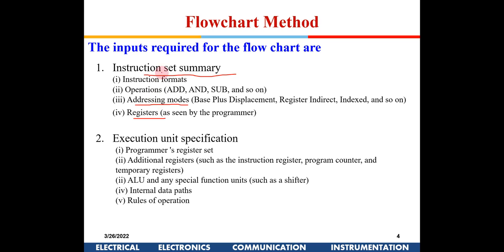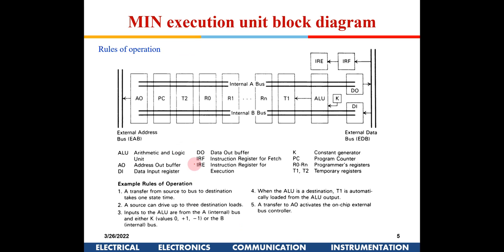Based on these assumptions we keep making the flowchart. If we find the flowchart is becoming complex or we cannot meet the user requirement, we can add a few more instructions. Similarly, the execution unit also needs to be specified: what are the programmer's registers, what additional registers exist, what functions the ALU can do — whether it can do AND, OR, addition, shifting — what the internal data paths are, and the rules of operations. These are the initial conditions we must assume.